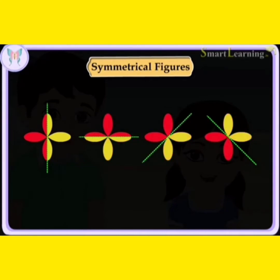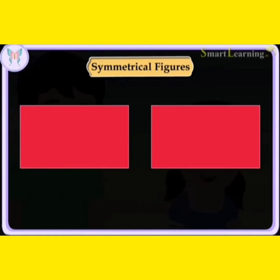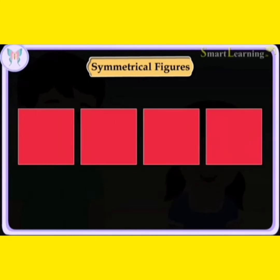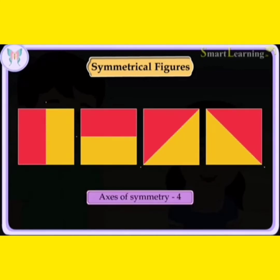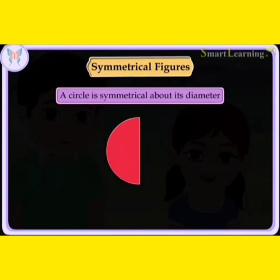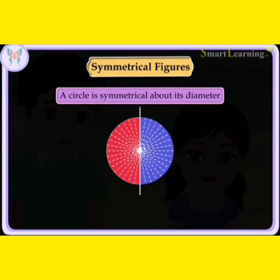Hence, this figure has four axes of symmetry. In the same manner, a rectangle has two axes of symmetry and a square has four axes of symmetry. A circle is symmetrical about its diameter. We know that there are infinite diameters of a circle.